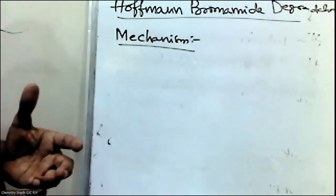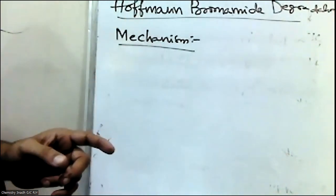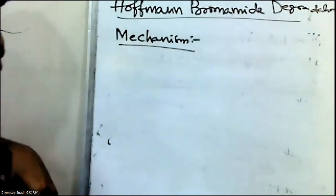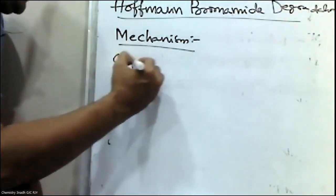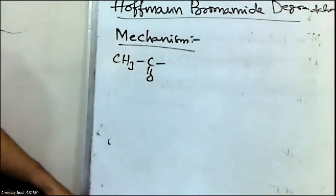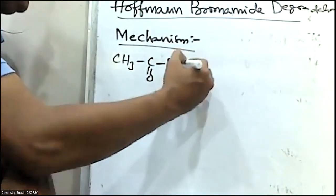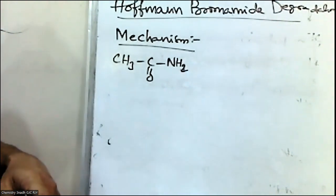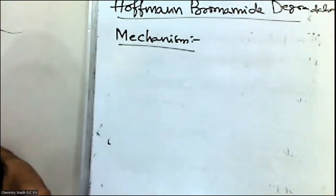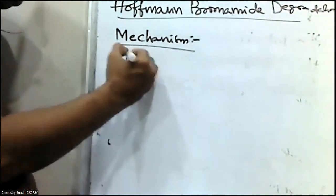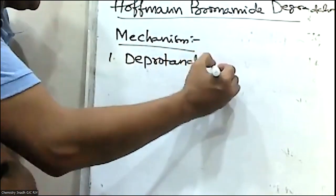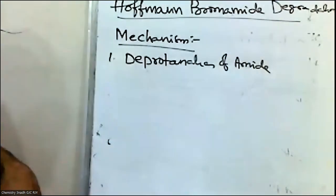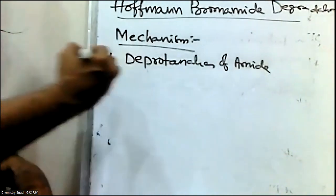Now let us discuss the mechanism of Hofmann Bromamide degradation. When amides are treated with bromine in the presence of alcoholic NaOH or aqueous NaOH, primary amines are formed. The first step in the mechanism involves the deprotonation of the amide.